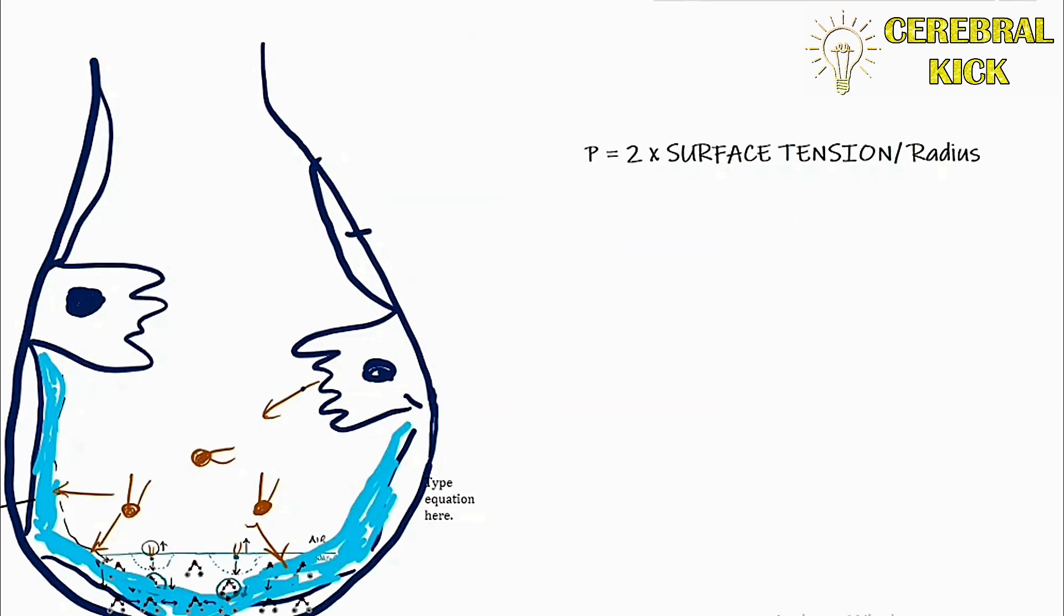As per Laplace's law, for any spherical body, this is the equation of surface tension. Can you see that the surface tension is directly proportional to the radius? Greater the radius, greater the surface tension exerted. And vice versa. We'll see how the alveoli behave through this equation.